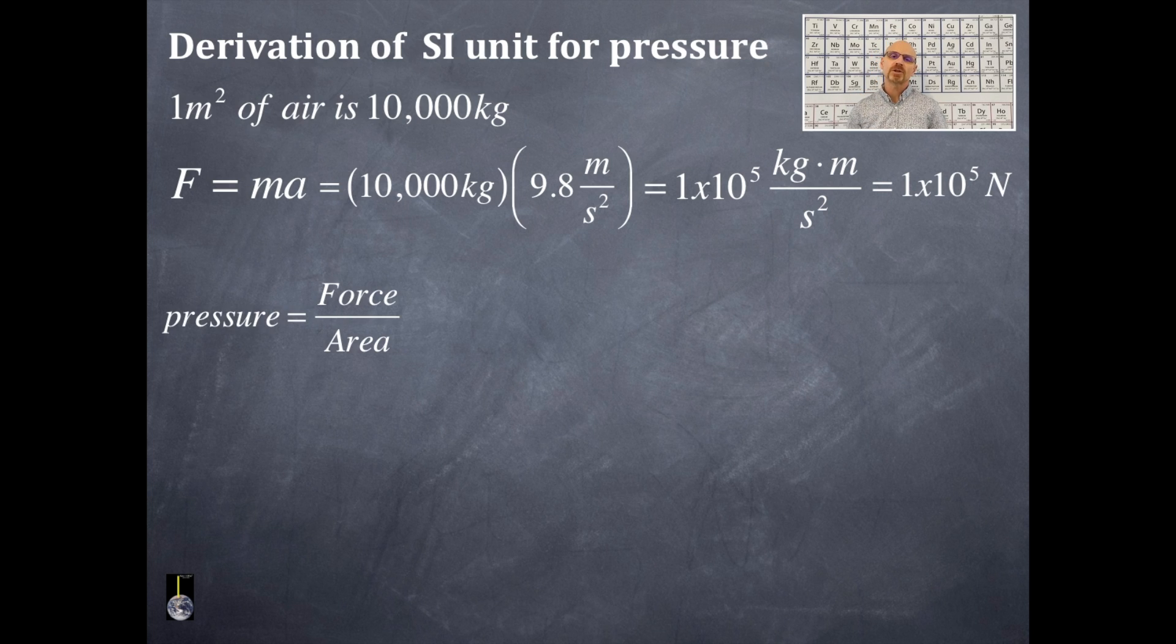The pressure is equal to the force divided by the area. I have the force that I just solved for, that's 1×10^5 Newtons. And what's the area? I have 1 meter square of air with a mass of 10,000 kilograms. I know the number for force and the number for the area, and that's 1×10^5 Newtons divided by meters squared.